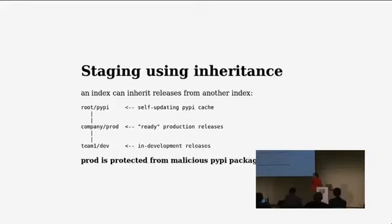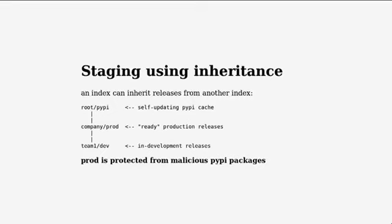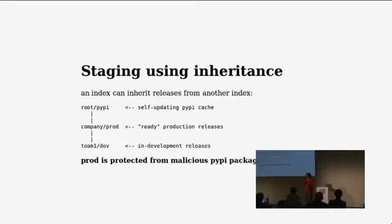One feature that distinguishes DevPI from other indexes you may know is that it provides an aggregation or inheritance feature. One possible layout that some people use is: you have the so-called root PyPI — that's the cache. You can use that directly if you don't care for private indexes. But here, we actually have a production index which contains private packages that you don't want to publish on PyPI.org, which might depend on PyPI release files not in your private index.